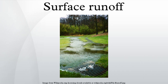Infiltration excess overland flow occurs when the rate of rainfall on a surface exceeds the rate at which water can infiltrate the ground, and any depression storage has already been filled. This is called flooding excess overland flow, Hortonian overland flow, or unsaturated overland flow. This more commonly occurs in arid and semi-arid regions where rainfall intensities are high and the soil infiltration capacity is reduced because of surface sealing, or in paved areas where pavements prevent water from infiltrating.